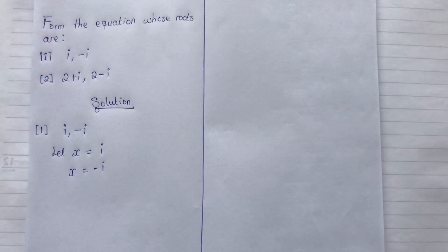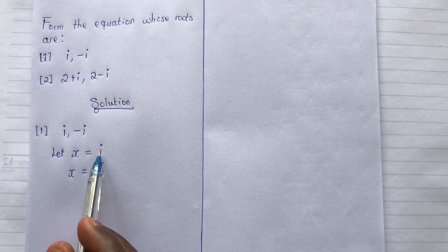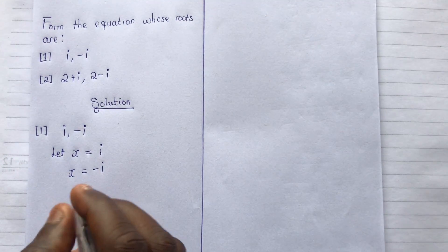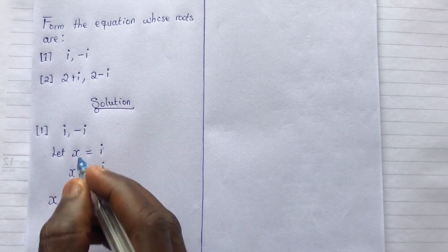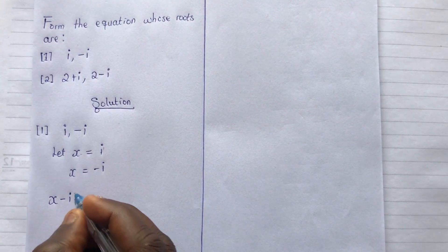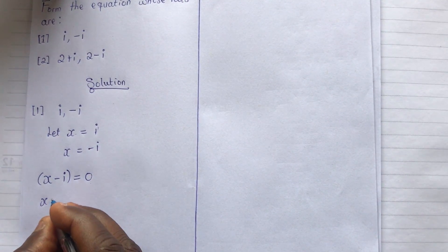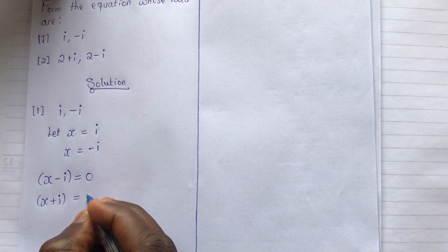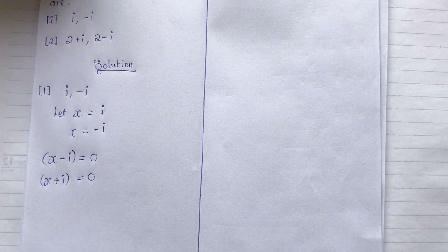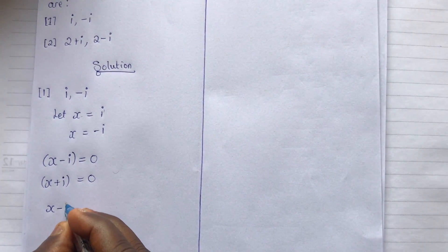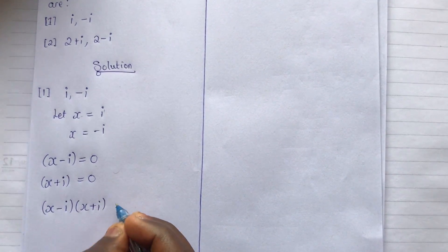From here we equate everything to zero. We cross the first value to the other side, so we get x minus i equals zero. Let me put this in brackets. Then we cross the second one, giving us x plus i equals zero. So the final step is to take both brackets, multiply the result, and equate it to zero. We have: (x minus i)(x plus i) equals zero.